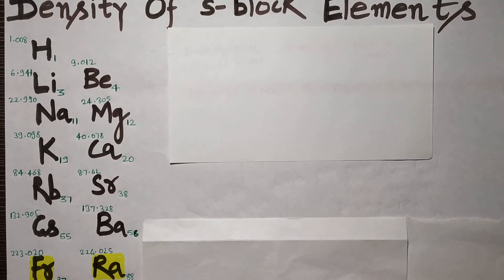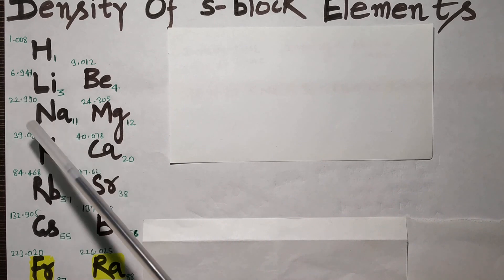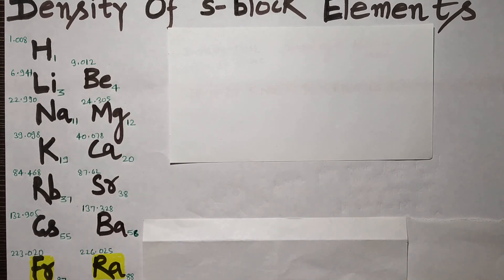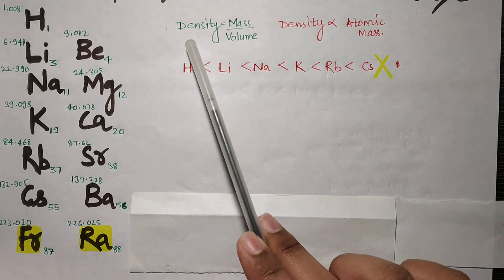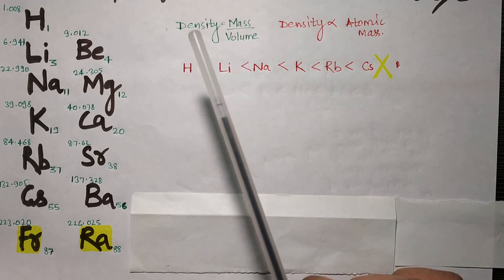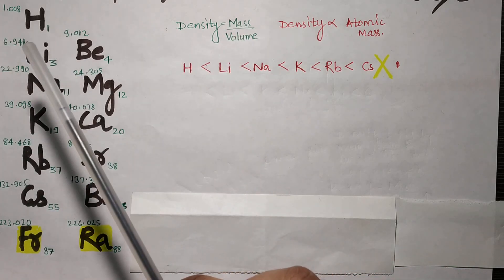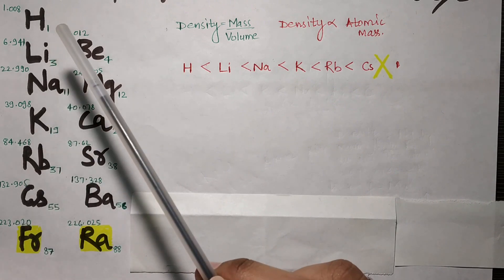How do we remember density? Density is equal to mass by volume. As we go from hydrogen, lithium, sodium, potassium, rubidium, cesium, francium down the group, we can see that atomic mass is increasing significantly as compared to volume.